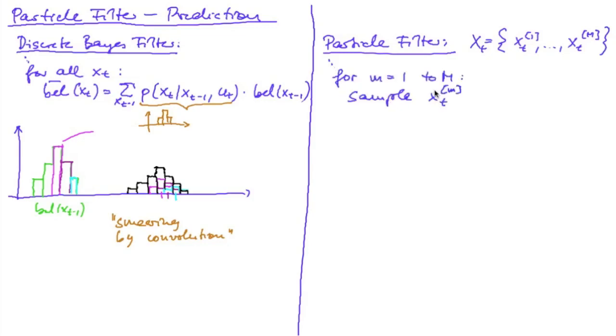We now do for every particle the following. We sample a particle for our predicted belief according to the distribution of this probability, which is the probability that I end up in xt if my previous state was exactly the mth particle of my particle set and the given control was ut.